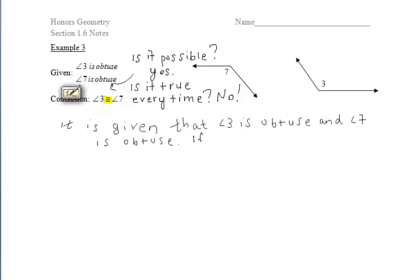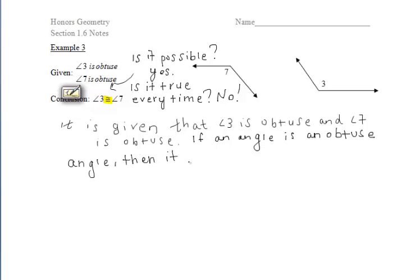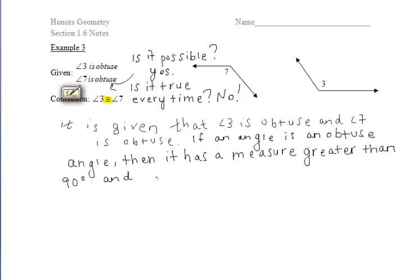Let's talk about why. Based off of the definition of an obtuse angle, which we discussed earlier in the chapter, we know that if an angle is an obtuse angle, then it has a measure that is greater than 90 degrees but less than 180 degrees. So if we wanted to represent our angle with x, we say that x must be between 90 and 180.